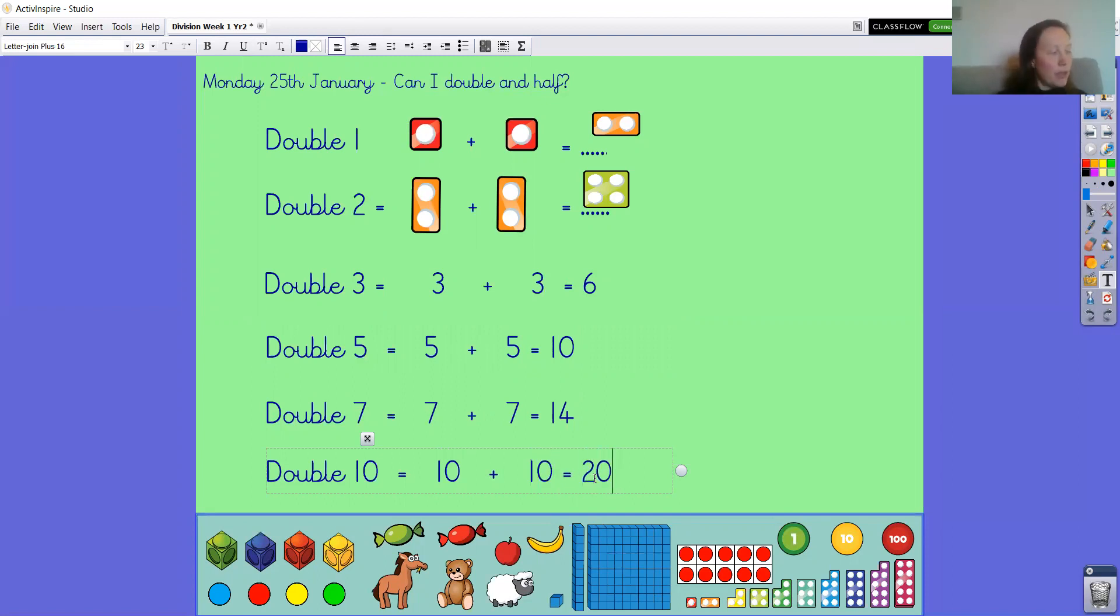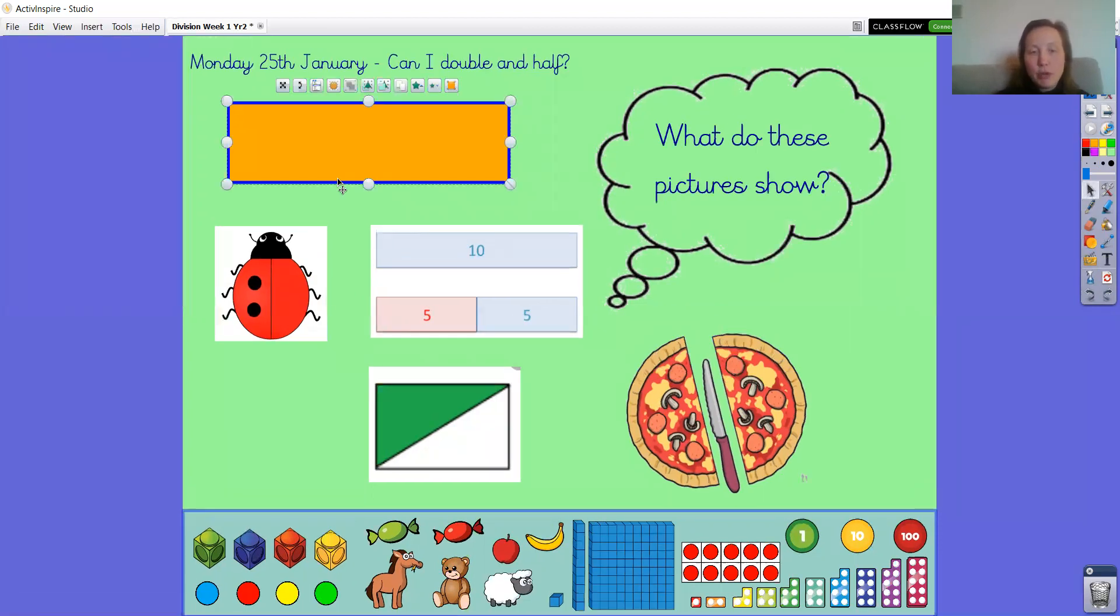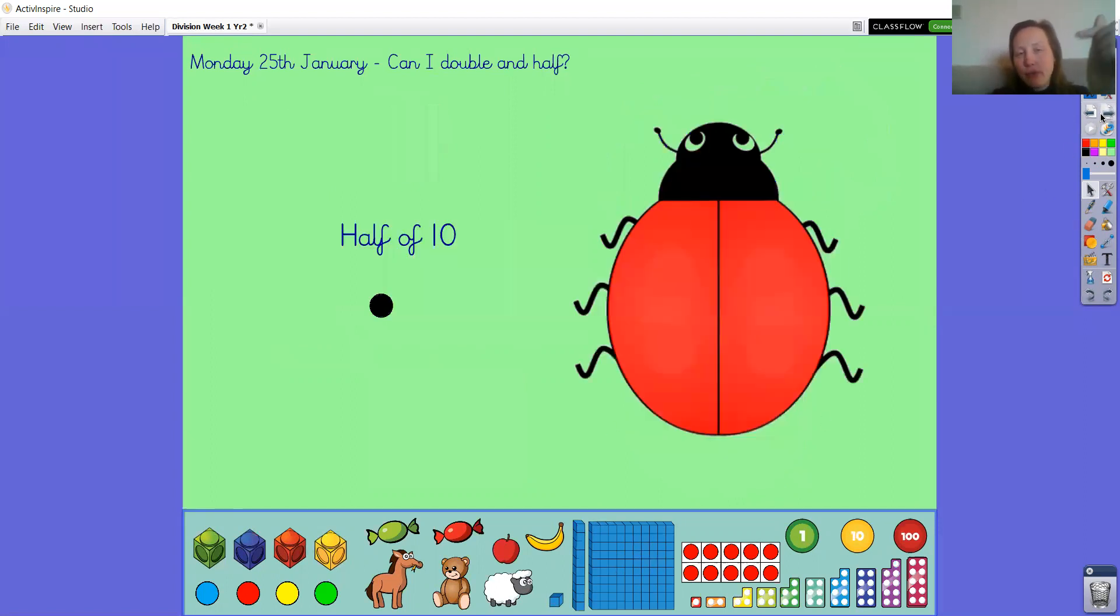So what do these pictures show us? You're right, they show us half. The ladybird has only got half of her spots. I have colored in half of this shape. This red part is showing us half of the number ten. And here we've got the pizza cut in half.